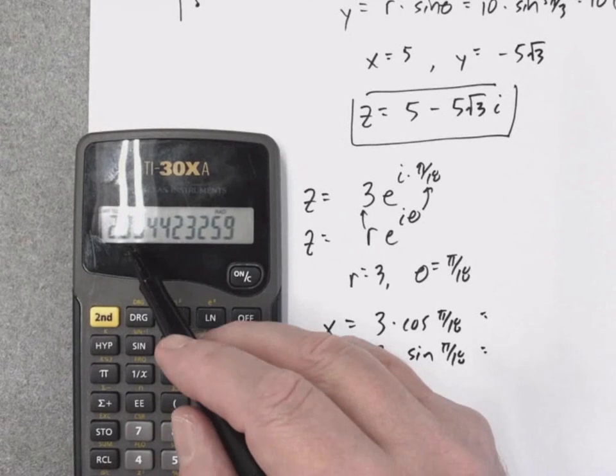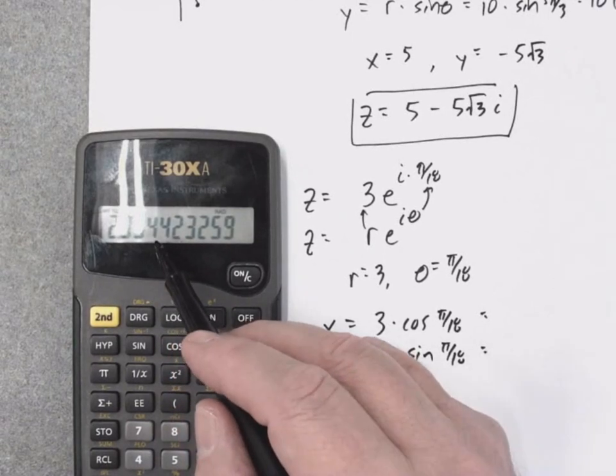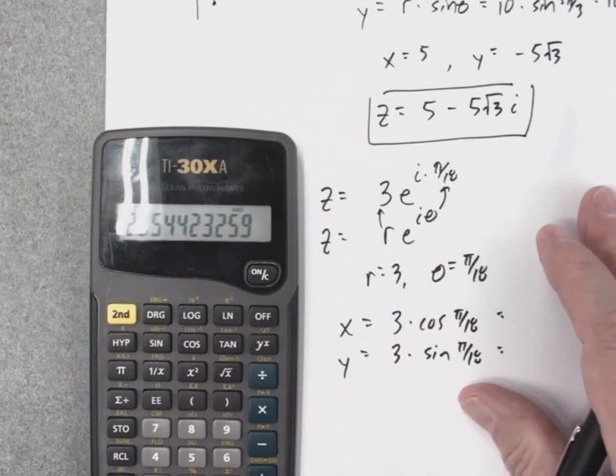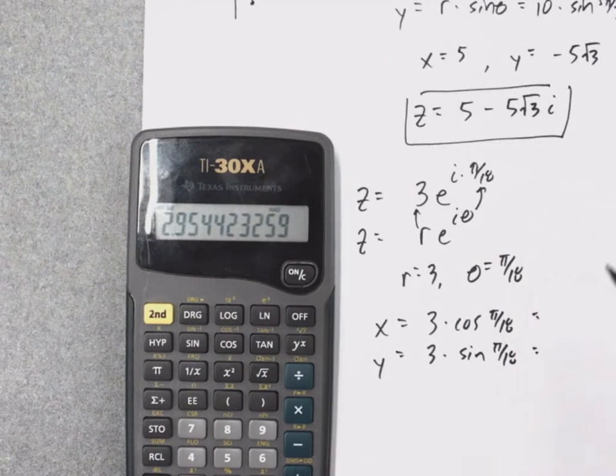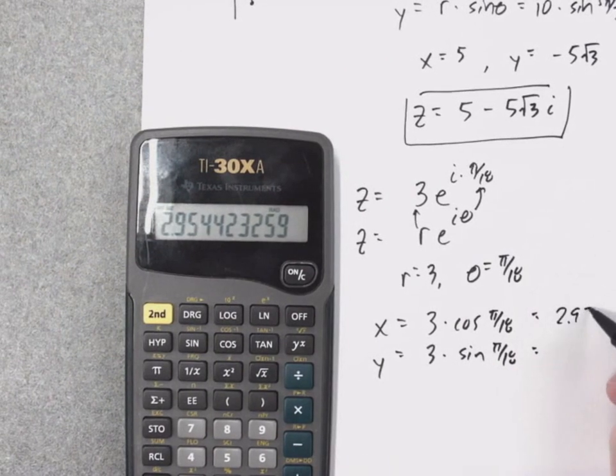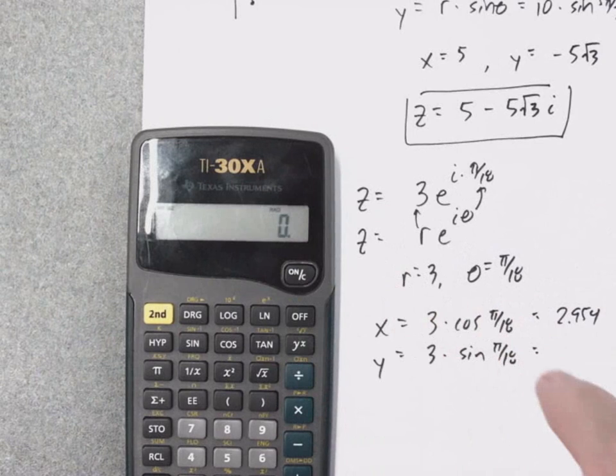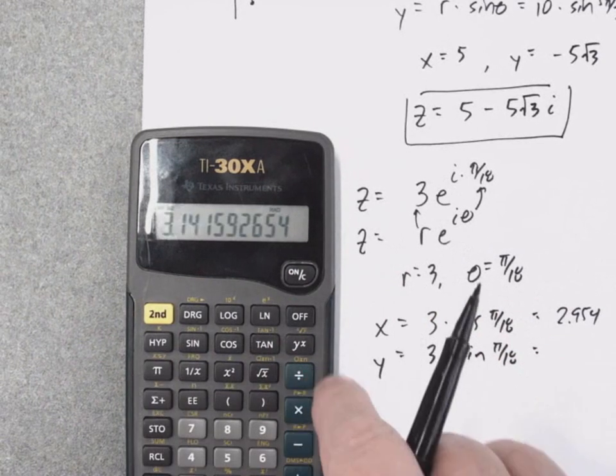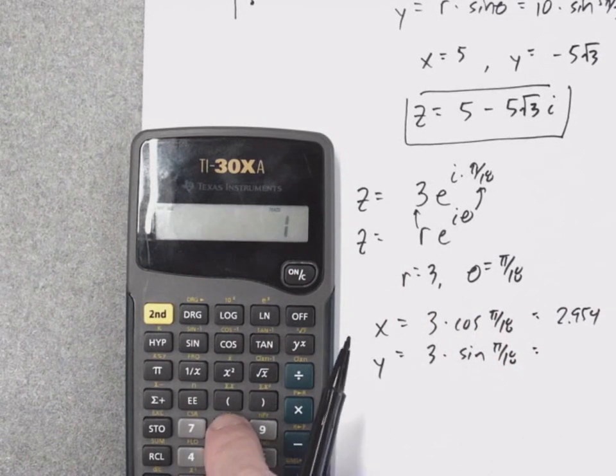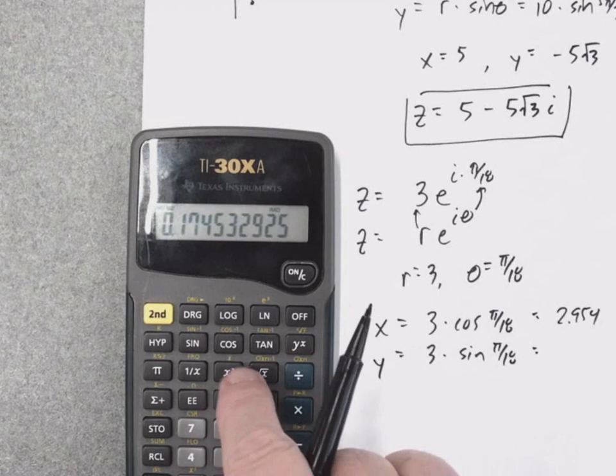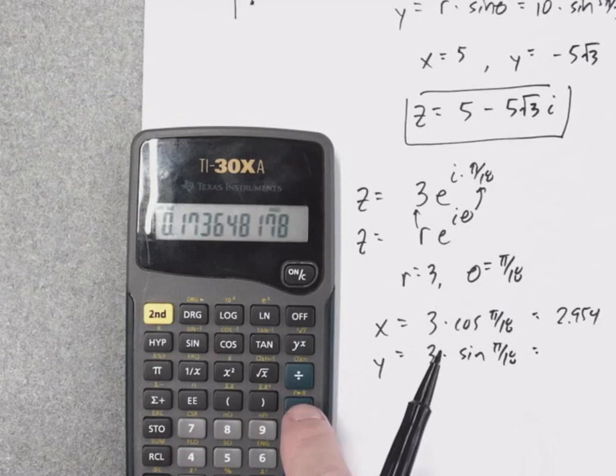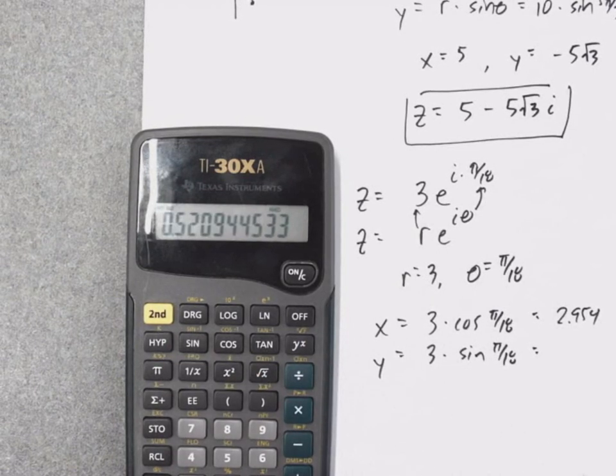Mine's in degrees, there's radians. Pi divided by 18 equals cosine times 3, 2.954. It looks like the 4 does not get rounded. And then for y, pi divided by 18 equals the sine times 3 equals...